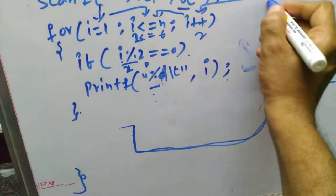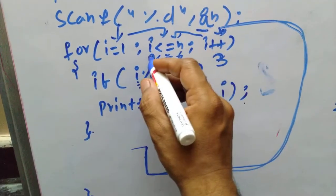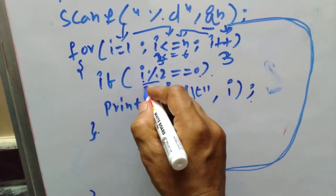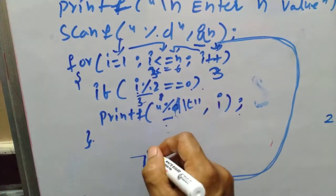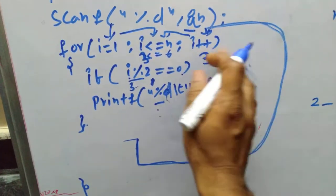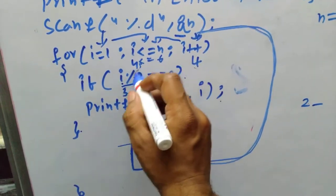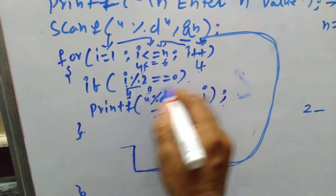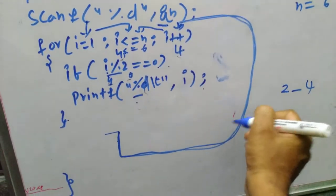Again it goes to the increment statement, i becomes 3. 3 <= 6 is true, but 3 % 2 gives remainder 1, and 1 == 0 is false, so it does not print. Then i becomes 4. 4 <= 6 is true, and 4 % 2 gives remainder 0, so 0 == 0 is true — the condition is true, and it prints 4.